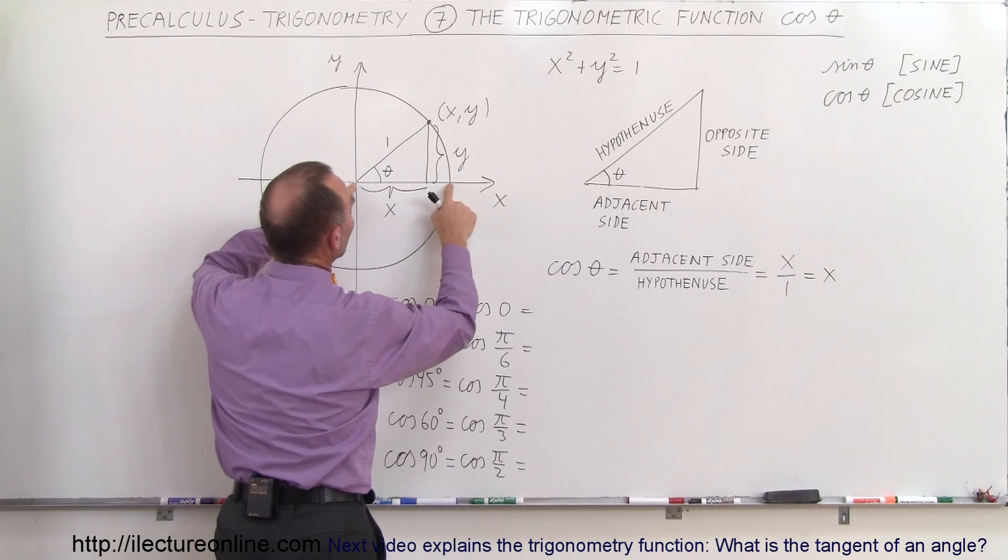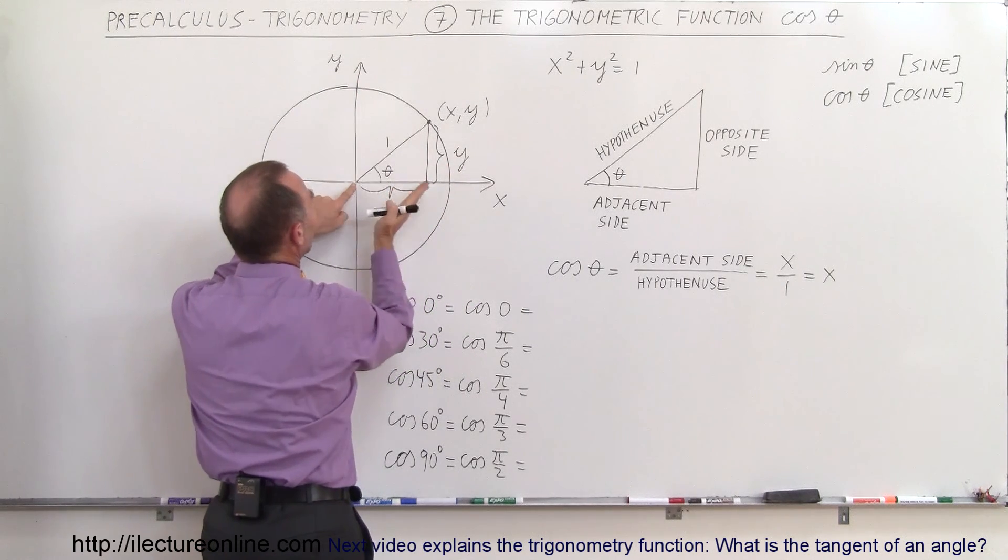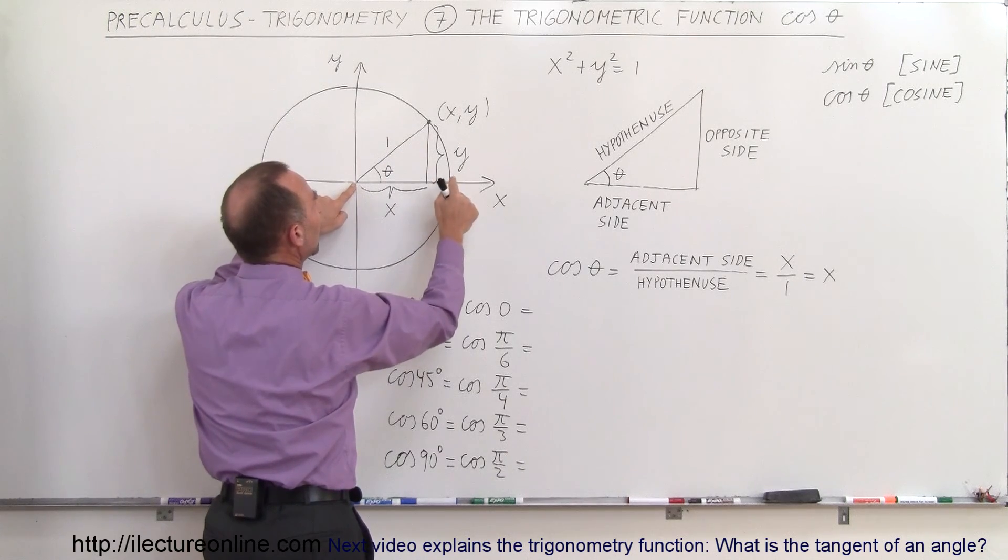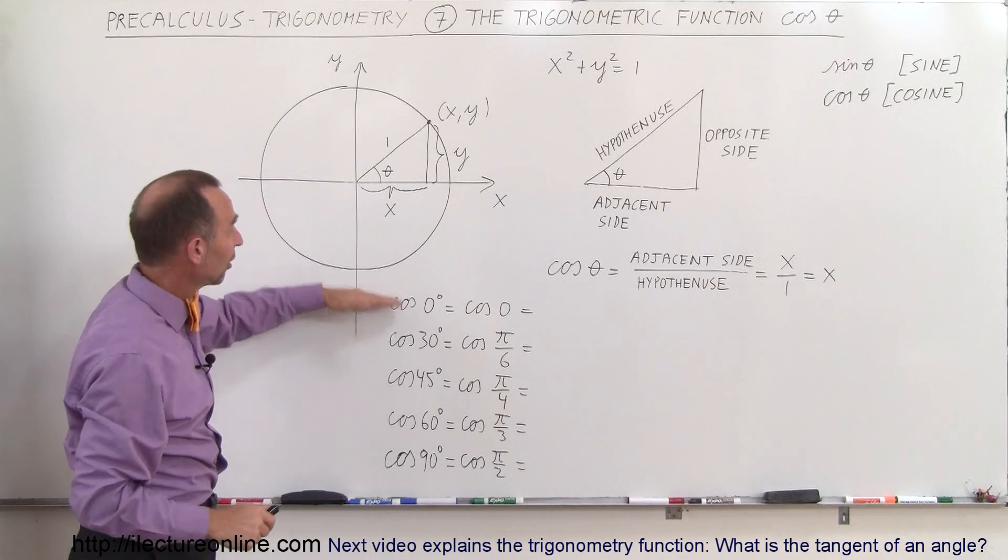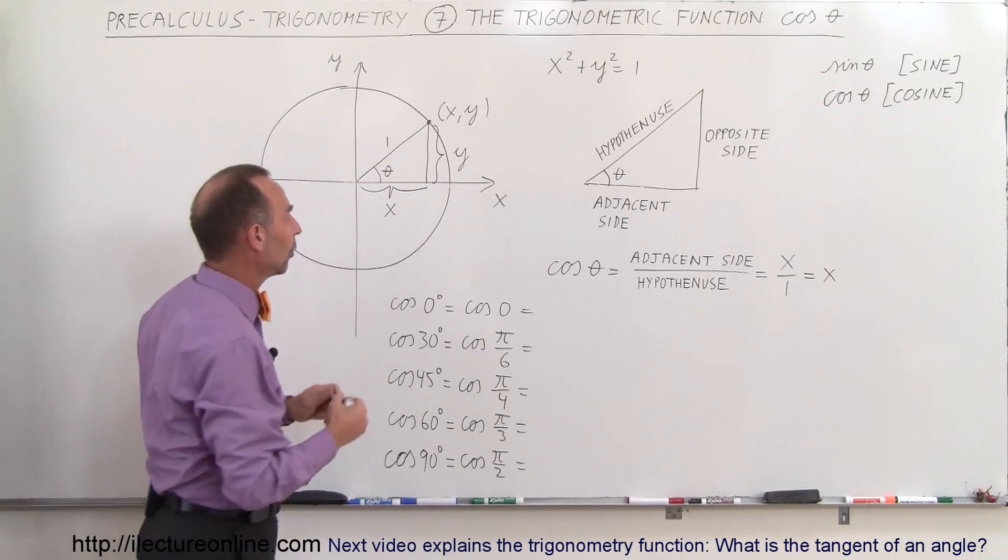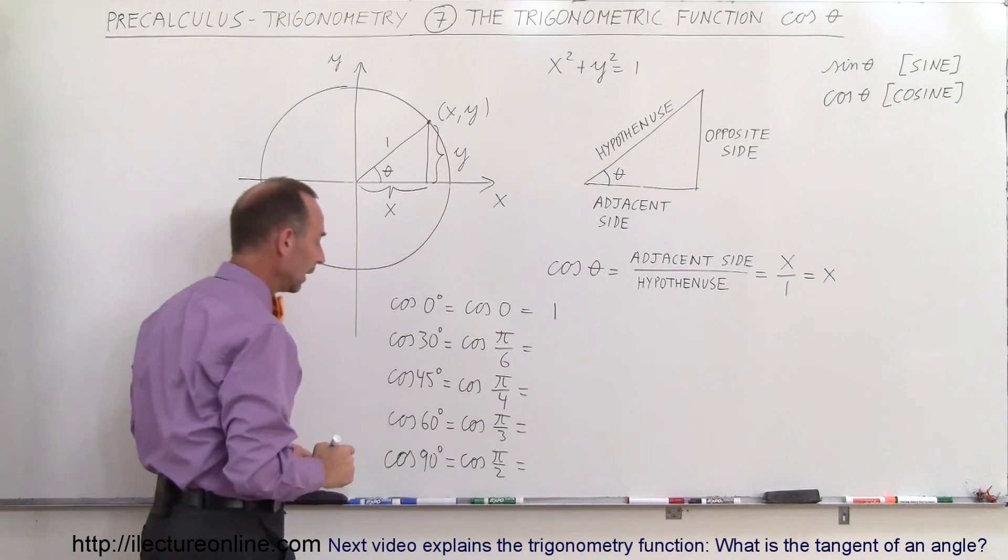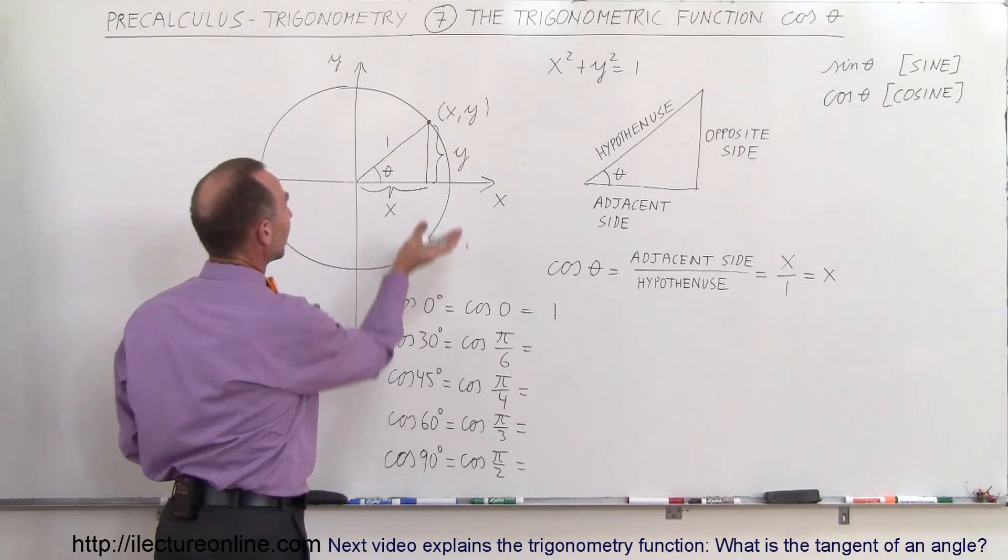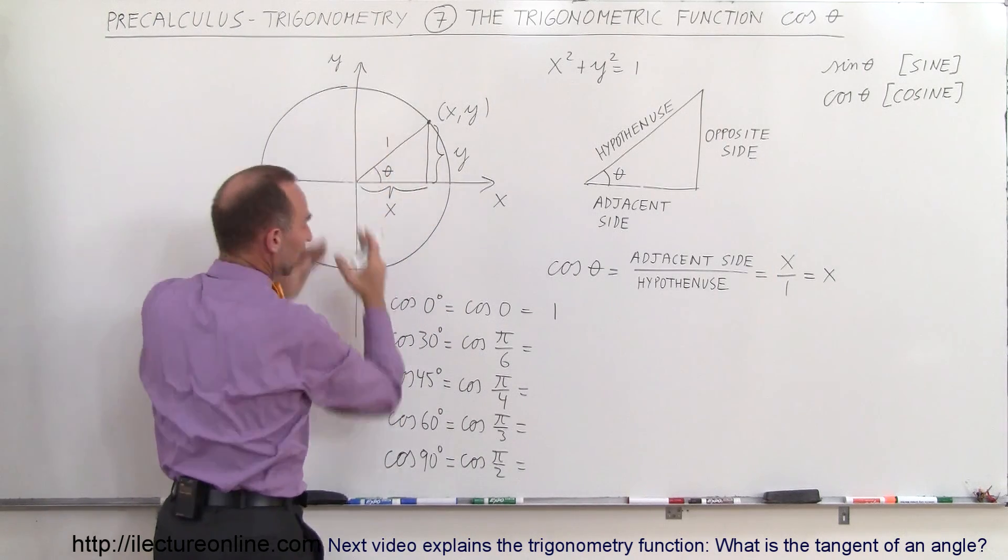When the angle is 0, x is 1. When the angle is 90 degrees, x is 0, and therefore any angle in between will be some value between 1 and 0. And here I have a list. So the cosine of 0 degrees, that means y is 0 and x will be equal to 1, so the cosine of 0 radians is equal to 1. The cosine of 90 degrees, that's right up here, you can see that the value for x goes to 0 as the angle goes to 90 degrees.